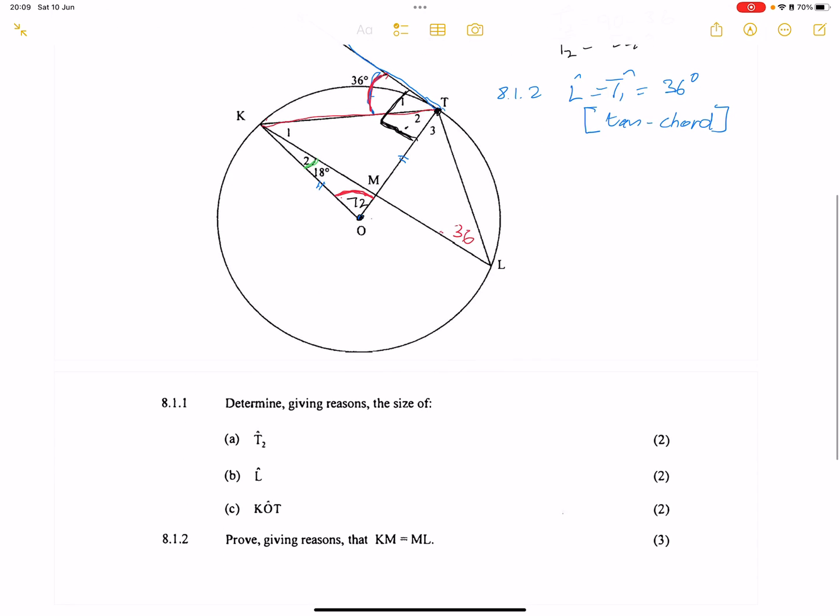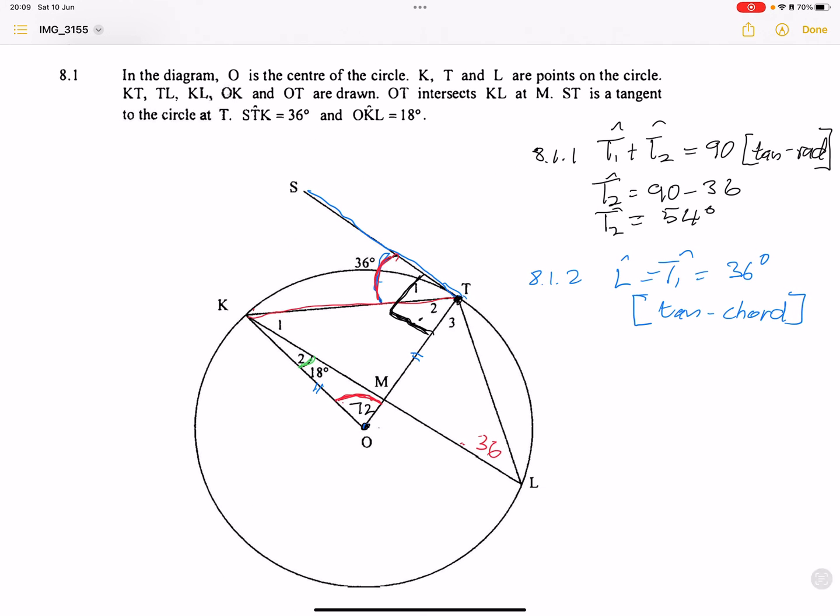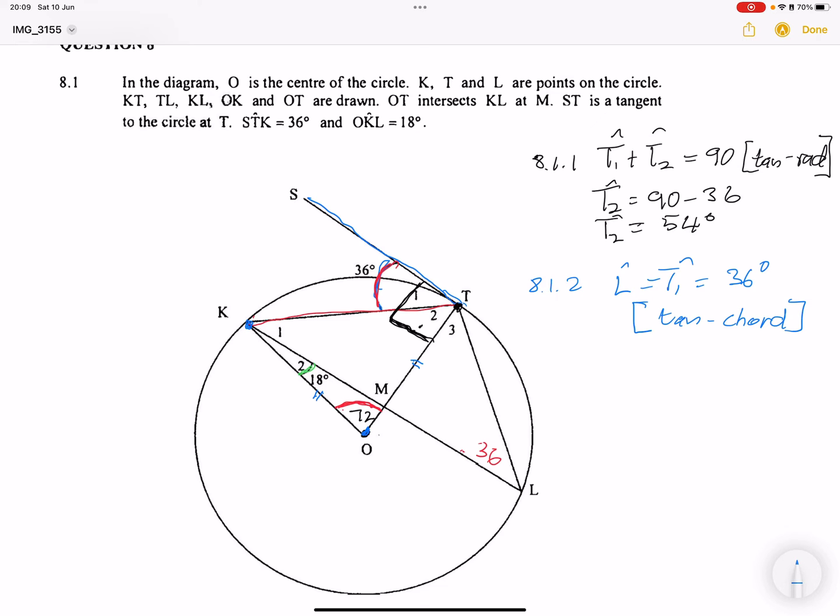The next question, they say calculate the size of KOT. Now remember, in this case, they're looking for that angle there, which we found to be 72. And remember, how did we do that? We said KOT should be equal to 2 times angle L, which in this case would be 2 times 36, and that gave us 72 degrees.